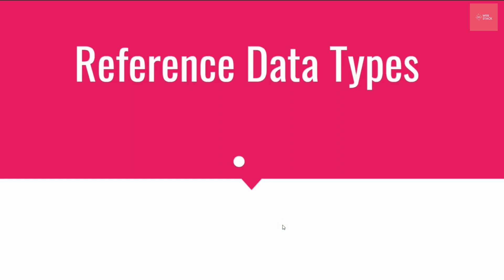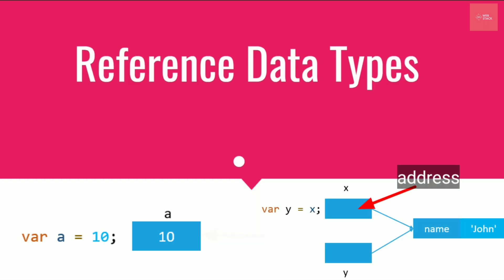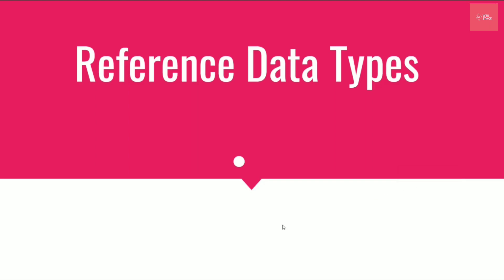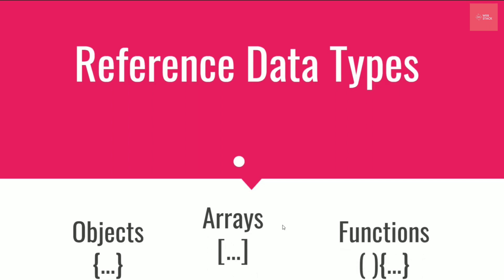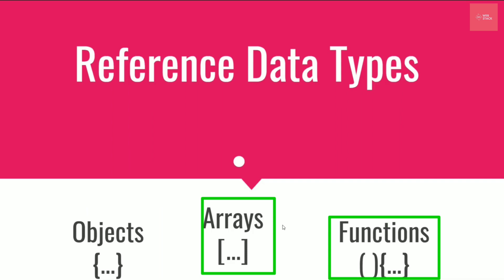Reference data types in JavaScript is actually a very good concept. Unlike primitive data types, we do not store values inside the reference directly — we are actually storing the reference, or you can say the address, of that value inside memory. The different reference data types in JavaScript are objects, arrays, and functions.